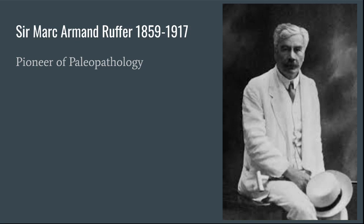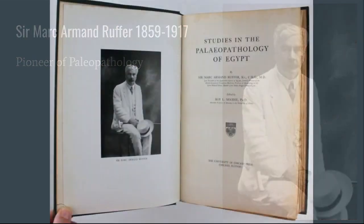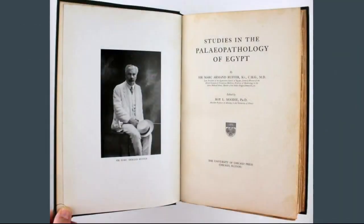Sir Marc Armand Ruffer is considered the pioneer of paleopathology. Originally working in England on diphtheria, he became infected with the disease and suffered severe paralytic sequelae that compelled him to resign. He took up a post in Egypt, where he became interested in paleopathology and made the first important observations. He invented a softening fluid for the rehydration of brittle mummy tissue before it could be processed for microtome sectioning. Ruffer published a book called Paleopathology of Egypt, and there's probably not a paper in existence on paleohistology without a reference to his pioneer work.